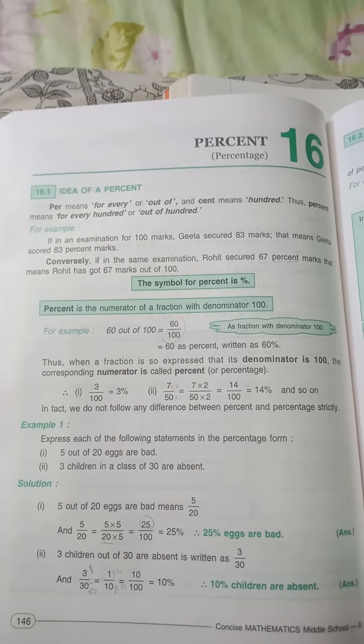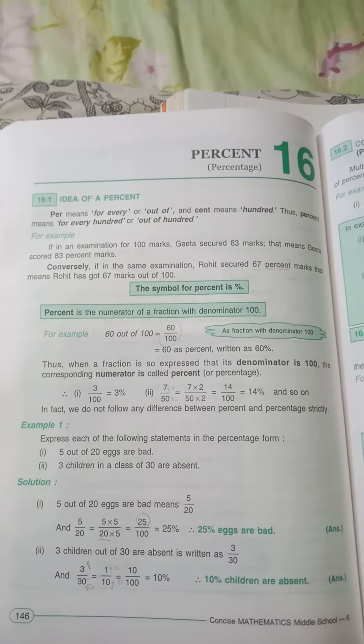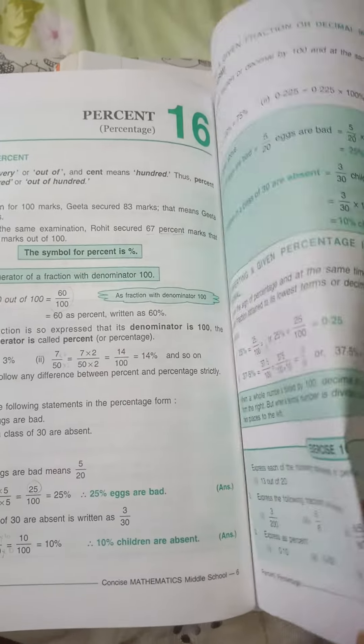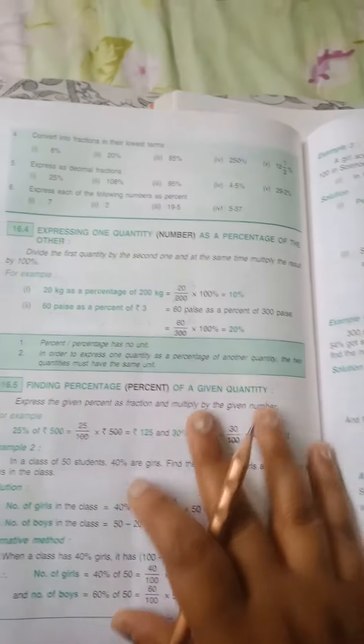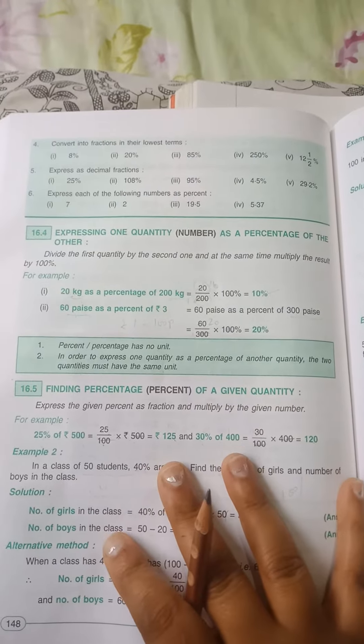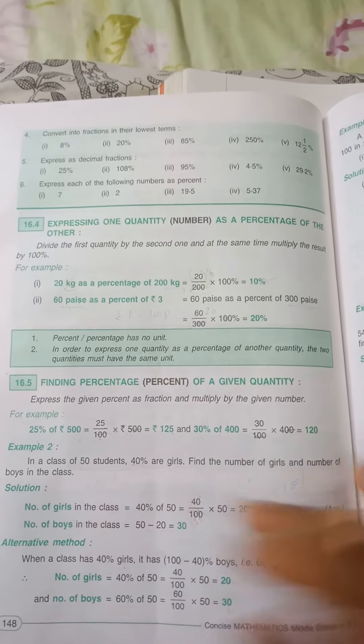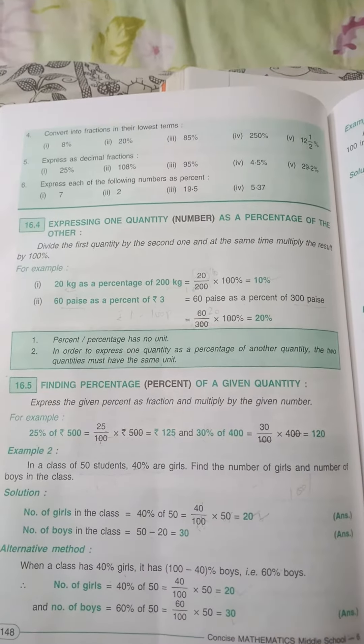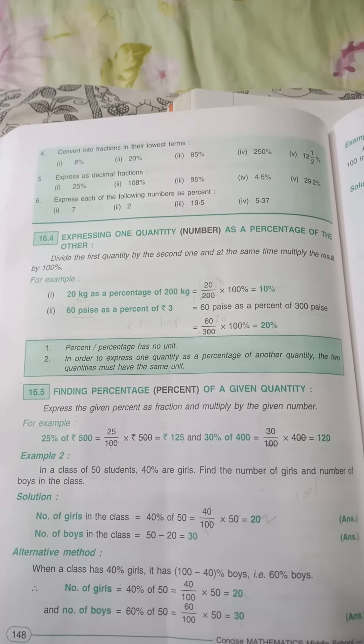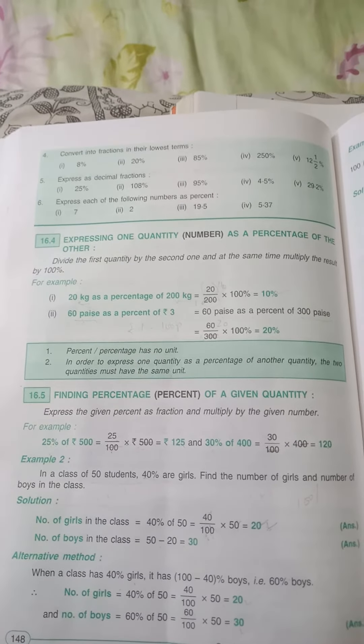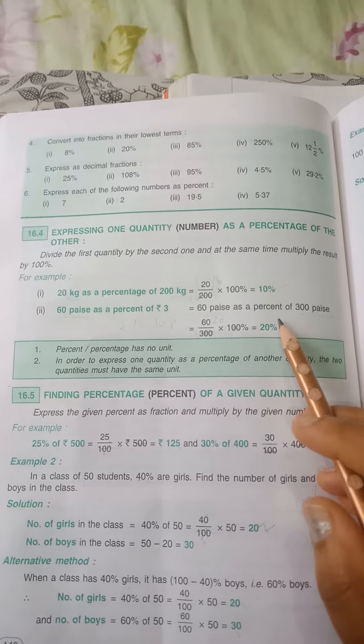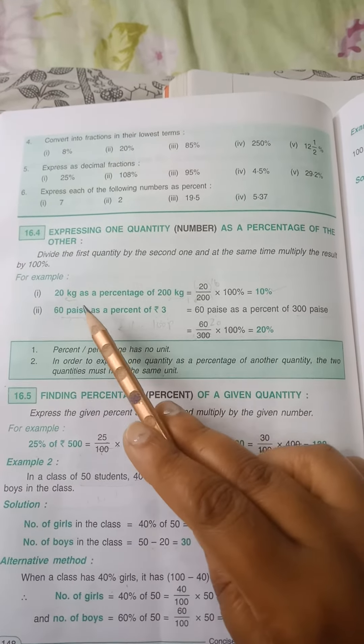Good morning class, we are doing chapter number 16, percentage. We have done exercise 16A and now we are on our new topic: expressing one quantity as a percentage of the other one. In this, you will divide the first quantity by the second one and at the same time multiply the result by 100 percent.